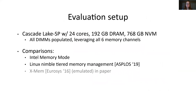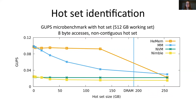Next, we move on to evaluation. To evaluate HEMEM, we run on a Cascade Lake machine with 24 cores, 192 gigabytes of DRAM, and 768 gigabytes of NVM. To fully leverage all memory channels, all DIMMs are fully populated. We compare HEMEM to Intel's hardware memory mode and Linux symbol tiered memory management proposed in 2019. To measure how well each system identifies and keeps the hot set of applications in DRAM, we run the GUPS microbenchmark. GUPS performs parallel read, modify, write operations on a configurable size memory with a configurable number of threads. We modify GUPS so that a portion of this memory is hot and is accessed 90% of the time. In this experiment, we configure GUPS with 16 threads and a 512 gigabyte working set and then vary the size of the hot set. We measure the average throughput in GUPS across three runs after a warm-up phase to allow each system a chance to identify the hot set.